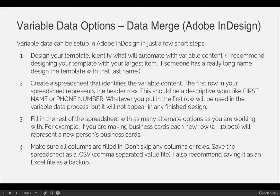Once you have your design and know what's going to automate — the name, last name, address, phone number, or whatever your variable content is — you're going to create a spreadsheet that identifies that variable content. The first row of your spreadsheet is the header row and will not be part of your variable content. It should use a descriptive word to explain what will change, so 'first name' or 'phone number' should be in that first row. The rows below each column determine what actually changes.